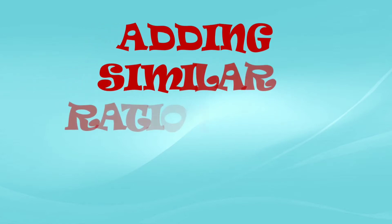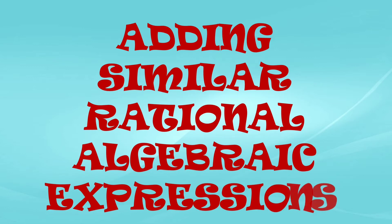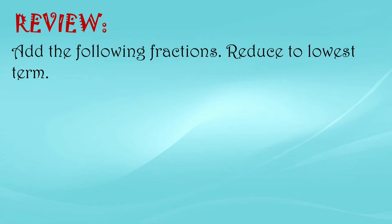So, adding similar rational algebraic expressions. When you say similar, they have the same denominator. Before I teach this, let's go back to fractions first. Add the following fractions, reduced to lowest term. Number 1: 9 over 7 plus 5 over 7. Our given are similar fractions — when we say similar fractions, they have the same denominator.